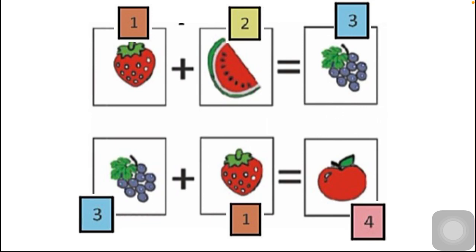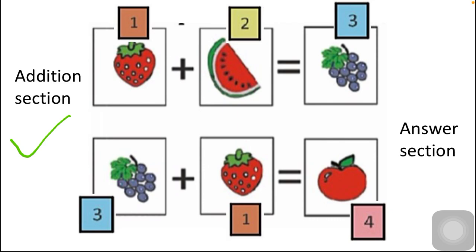Our assumption is correct. The key trick is: when you add two numbers, the answer is always the greatest number. So the left side of each equation — the addition section — must use smaller numbers, and the right side — the answer — must be the bigger number. We cannot put three and four on the addition side because their sum would exceed four.